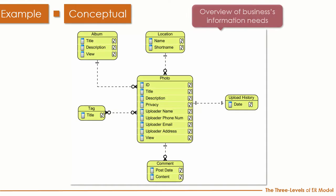The conceptual model is a very simple overview of the business information needed. In our photo album software example, we have a Photo, a Location, and an Album — you can see one album has multiple photos, etc. It stores only the main concepts.